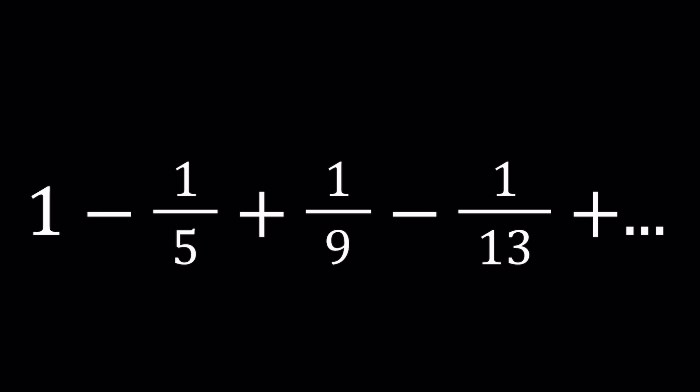So we have 1 minus 1/5 plus 1/9 minus 1/13, so on and so forth, where the signs alternate plus and minus. And the denominators are numbers that are one more than a multiple of four. In other words, numbers that are 1 mod 4 appear in the denominators.